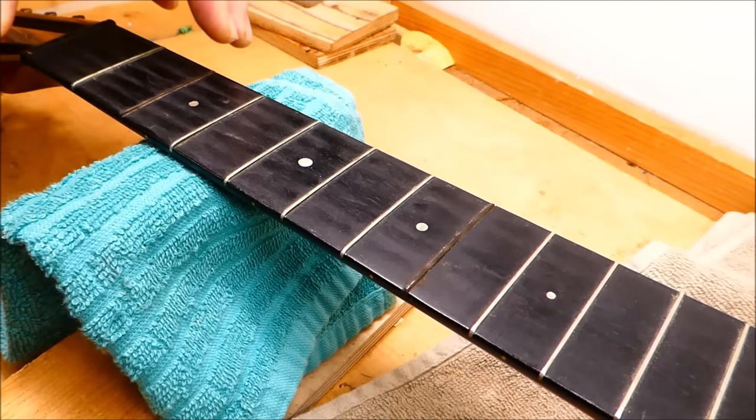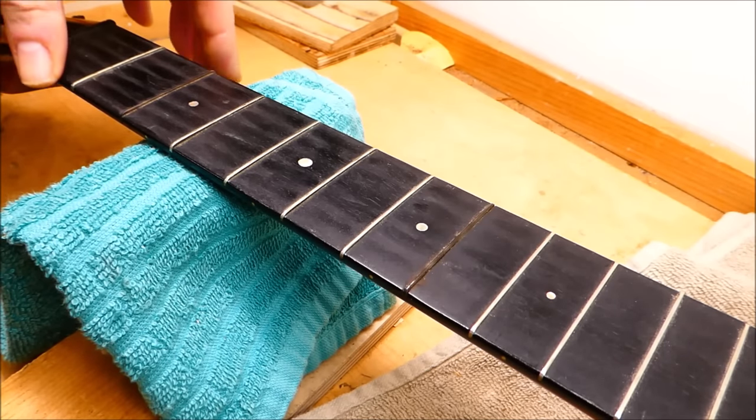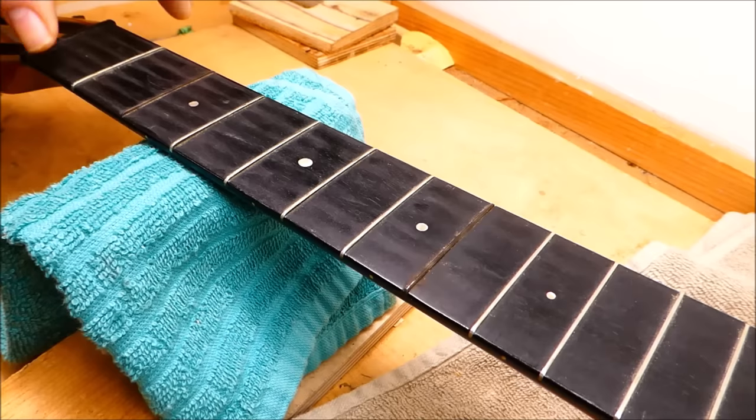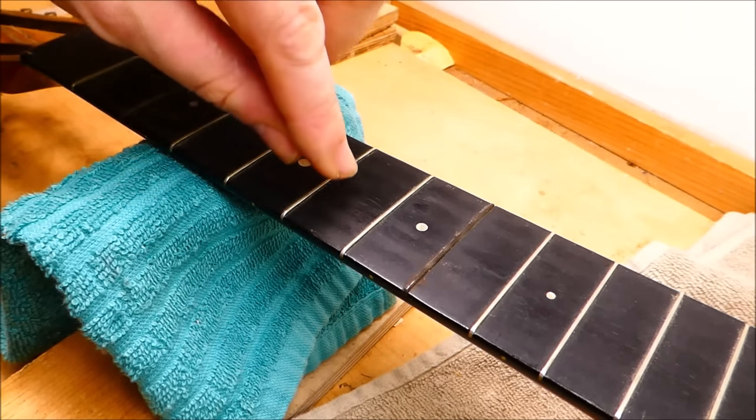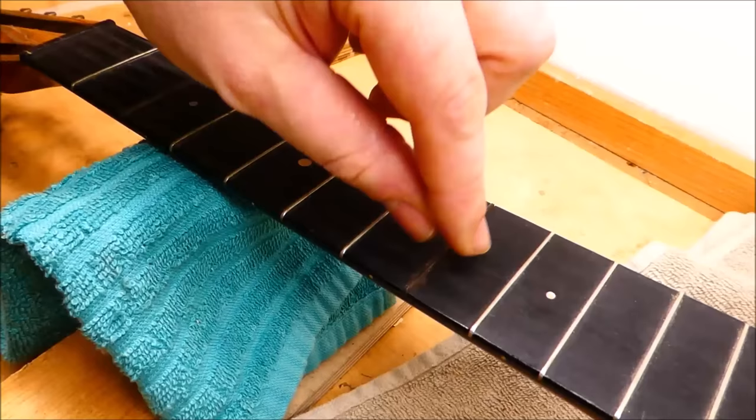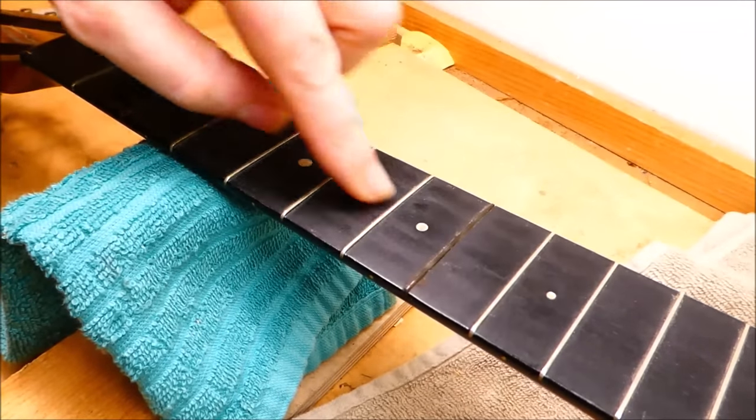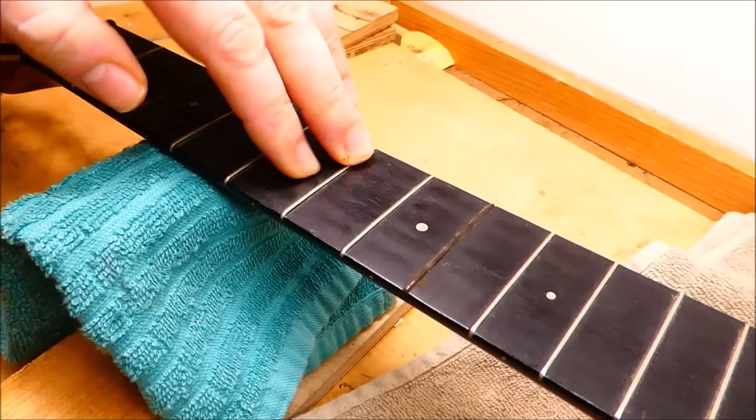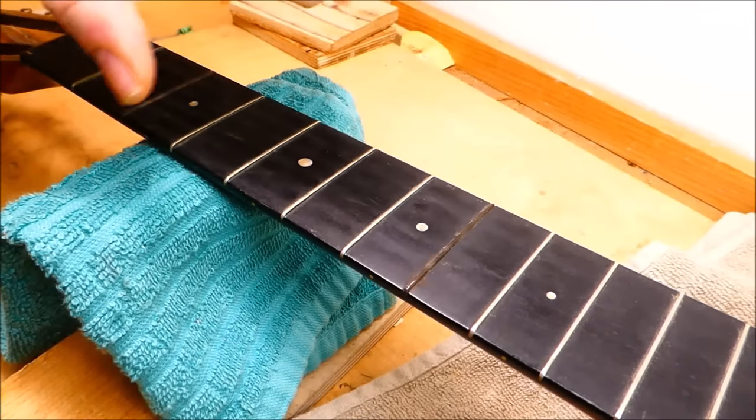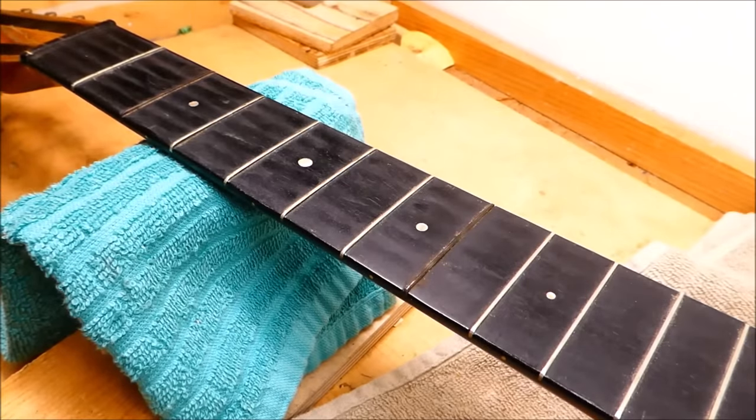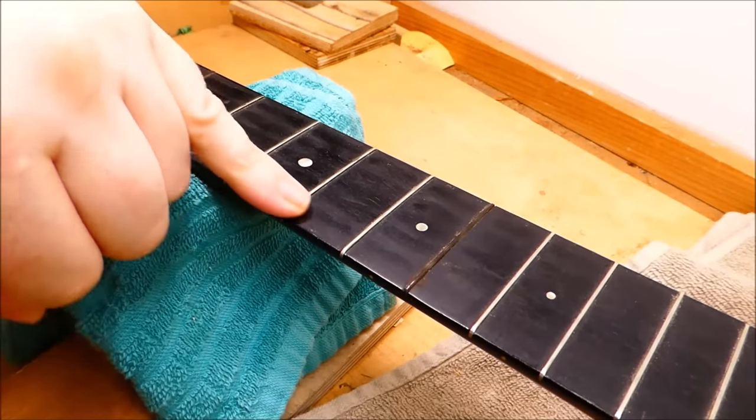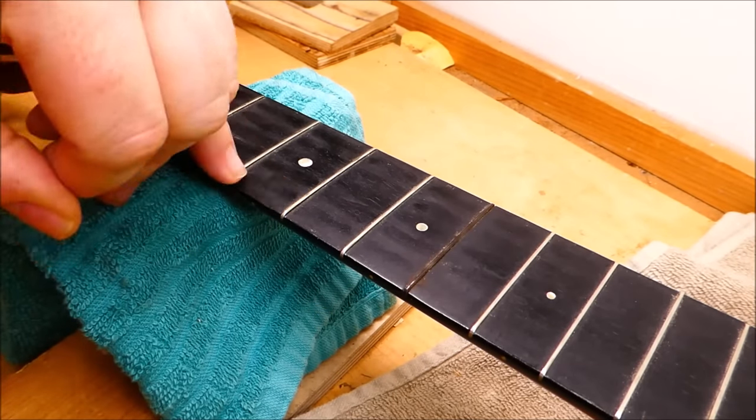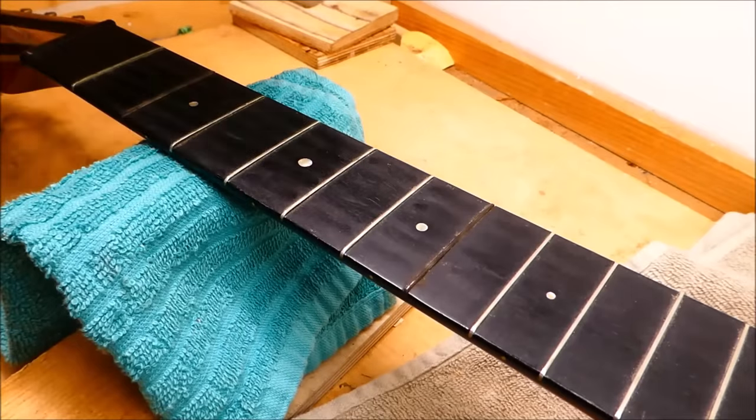So what Martin could do at the factory to counteract string tension and get the desired relief would be to use one width of fret wire for the first three or four frets. And then go up a size or two, adding a thousandth or so, for the frets in the area where the relief is usually greatest, to push the board outward slightly and counteract that. And that's what we do when we do repairs on bar frets as well. I can hopefully take these frets out in the center and put in a slightly wider wire, which will straighten the board somewhat.